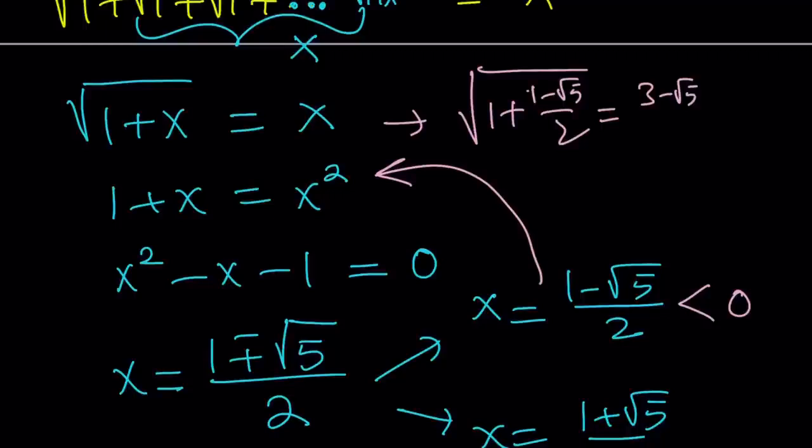And then the square root of that equals x, which is 1 minus root 5 over 2. But the square root of a positive number cannot be negative in the real world. So that solution does not satisfy the original problem.